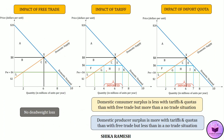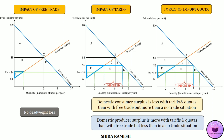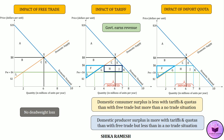Here we can see all three diagrams together for comparison. We compare domestic consumer surplus and producer surplus across the no trade, free trade, tariff, and import quota scenarios. When the government implements tariffs and import quotas, domestic consumer surplus is less than under free trade but more than in a no trade situation. Regarding domestic producer surplus, it is more under tariffs and import quotas than under free trade, but less than in a no trade situation. In the case of tariffs, rectangle HJ represents the government's revenue, whereas under an import quota, rectangle HJ represents foreign suppliers' revenue.